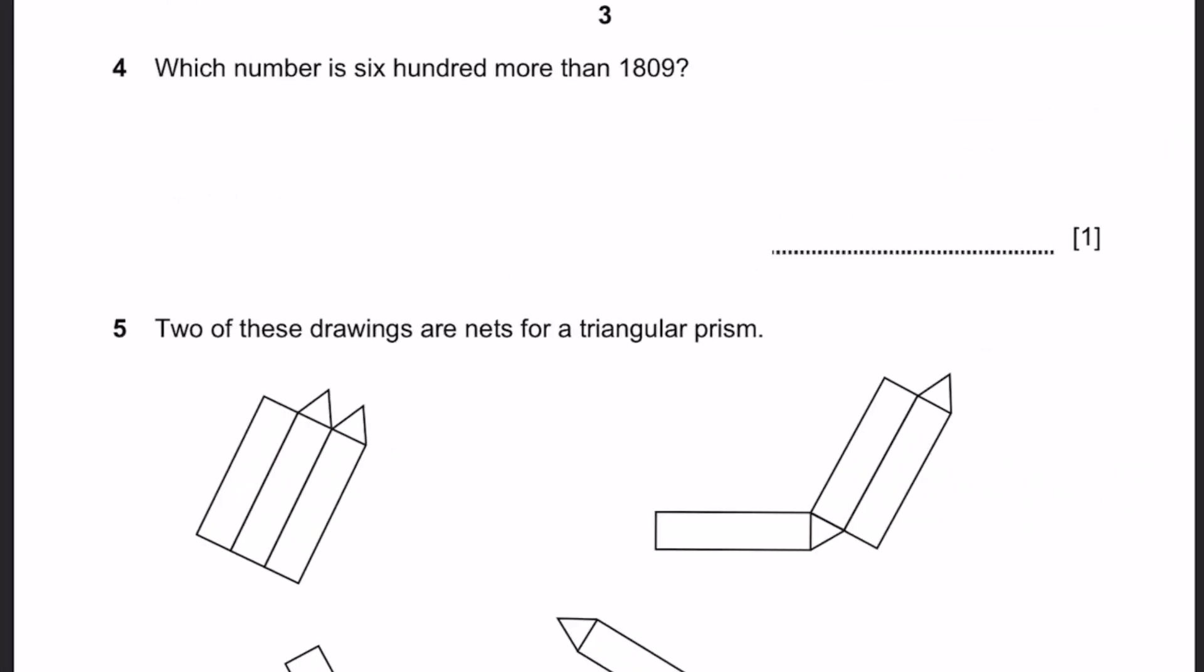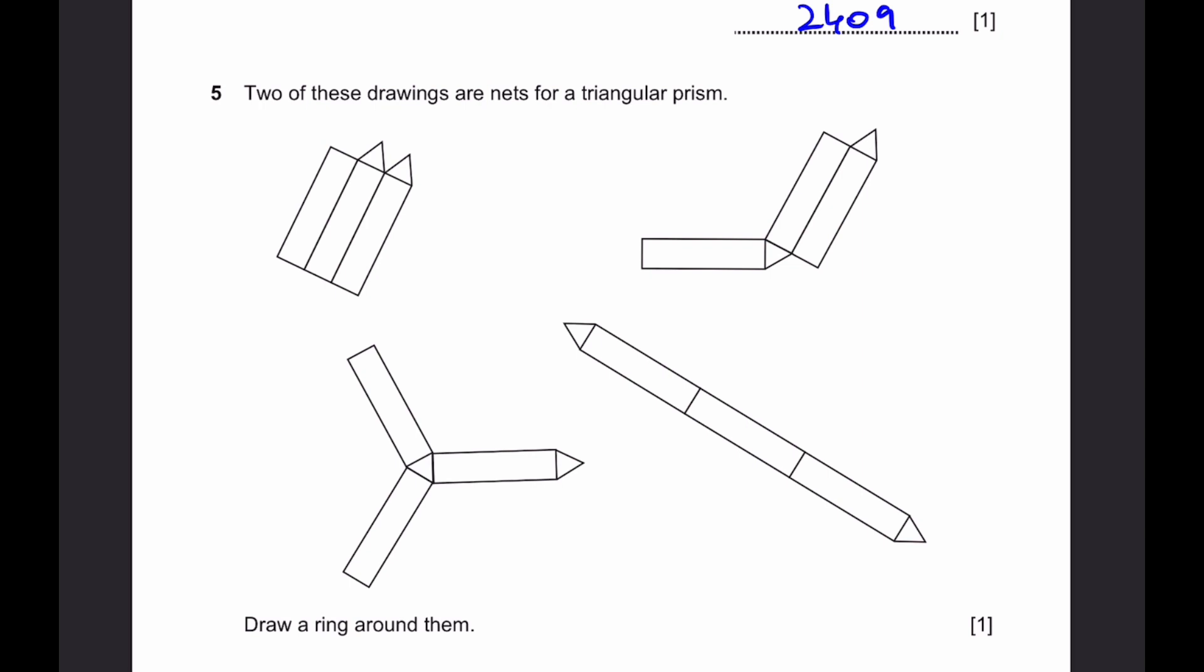Question 4. Which number is 600 more than 1809? That means it's 1809 plus 600, which is equal to 2,409. That's the answer. Question 5. Two of these drawings are nets for a triangular prism. Draw around them.